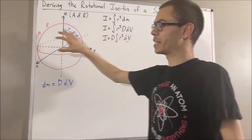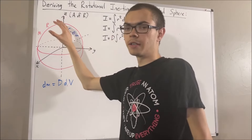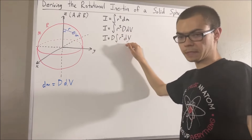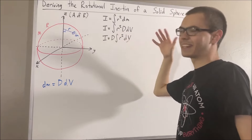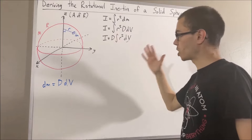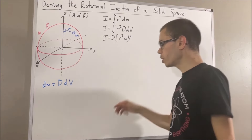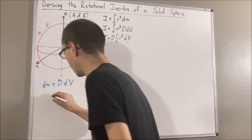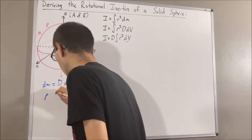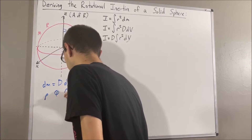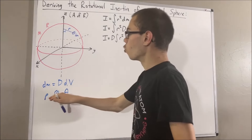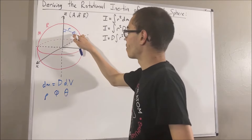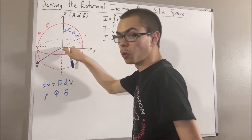Since we're dealing with a sphere, it might be nice if we convert our integral into spherical coordinates, and that's the approach we're going to take. I'm going to symbolize spherical coordinates as rho, phi, and theta. Rho represents the distance from our differential mass to the origin.